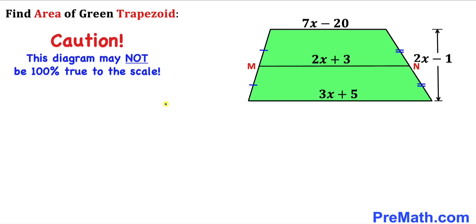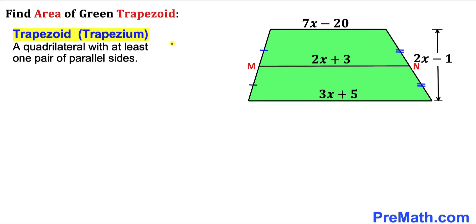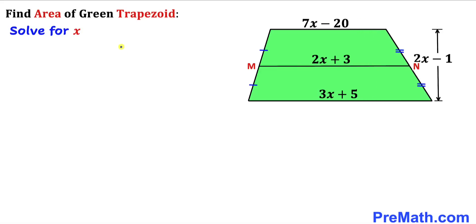Note that this figure may not be 100% true to scale. A trapezoid, also called a trapezium, is a quadrilateral with at least one pair of parallel sides. In our case, these parallel sides are called the bases of the trapezoid.